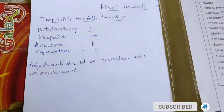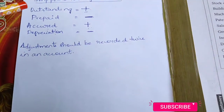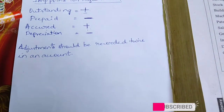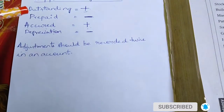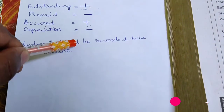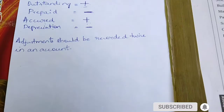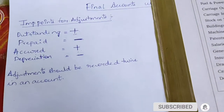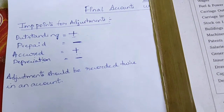Now I will show clarity here. The rule is: accrued — plus; prepaid — minus; depreciation — minus. Outstanding — plus. Remember this. Take a screenshot and note it down.